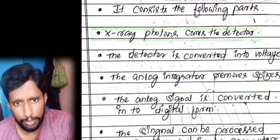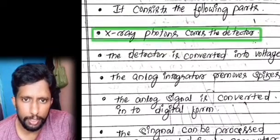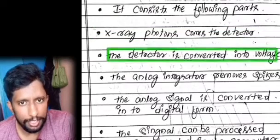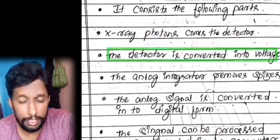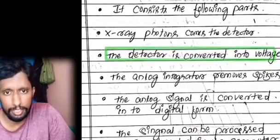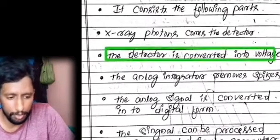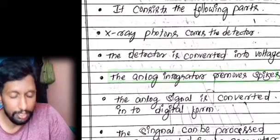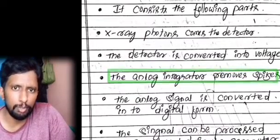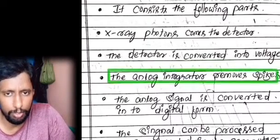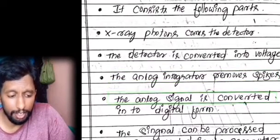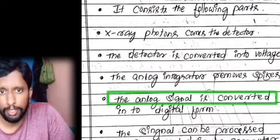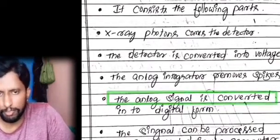In the data acquisition process, X-ray photons come to the detector. The detector converts them to voltage. The analog integrators remove spikes, and then the analog signal is converted into digital form.